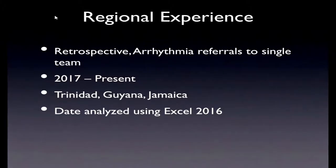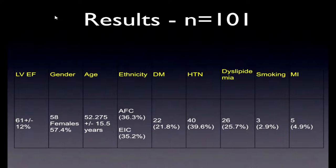Our regional experience is a retrospective analysis from a single team over the last two years spanning three CARICOM territories: Trinidad, Guyana, and Jamaica. We looked at 101 patients over this period. Patients had essentially normal ejection fractions; more than half were female; the majority were middle-aged. By ethnic spread, just over a third were Afro-Caribbean and just over a third were East Indian Caribbean. About 20 percent were diabetic, hypertension was much more prevalent, and only 5 percent had previous myocardial infarction.